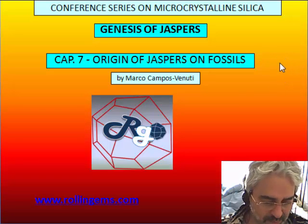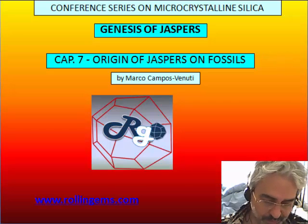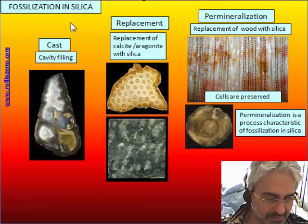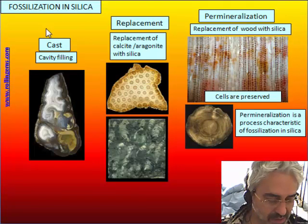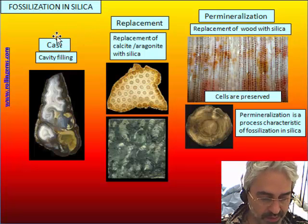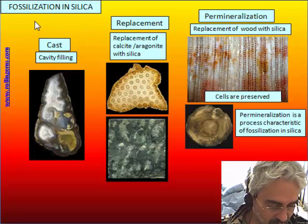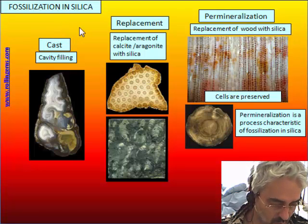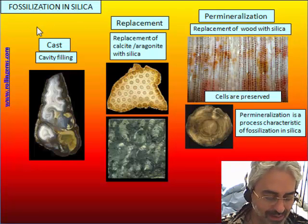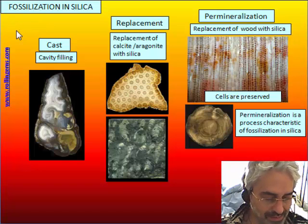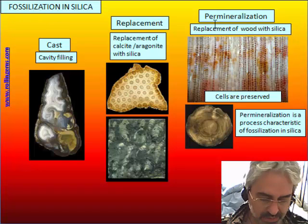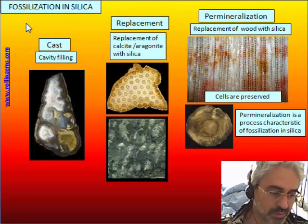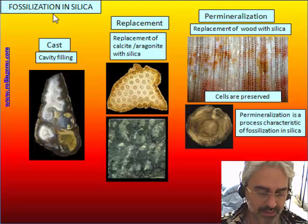In this chapter we will talk about jasper formed on fossils. There are basically three types of fossilization by silica. Fossils in silica are not so common — more common is in carbonate, in calcite. But there are some kinds of fossils that are most replaced by silica than others.